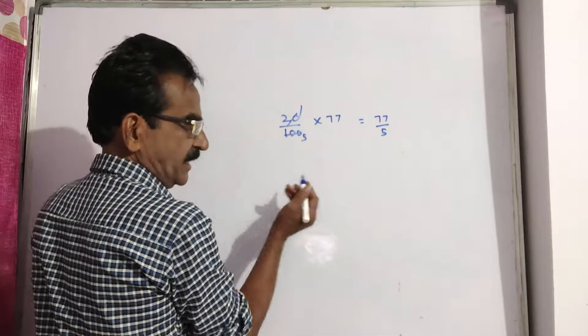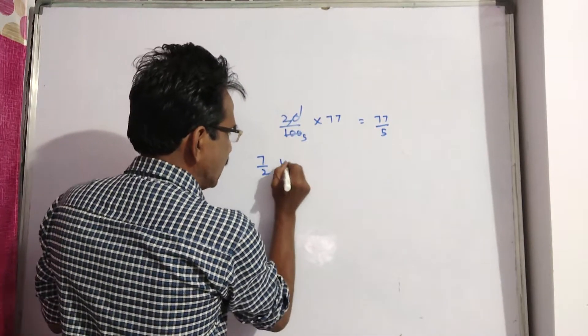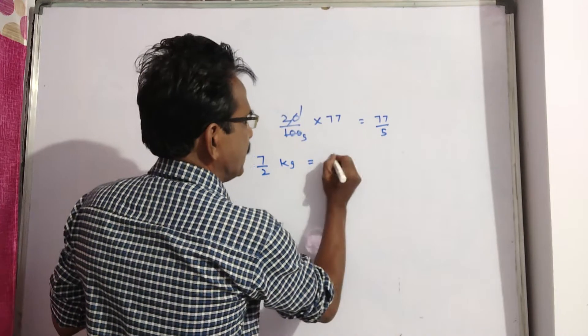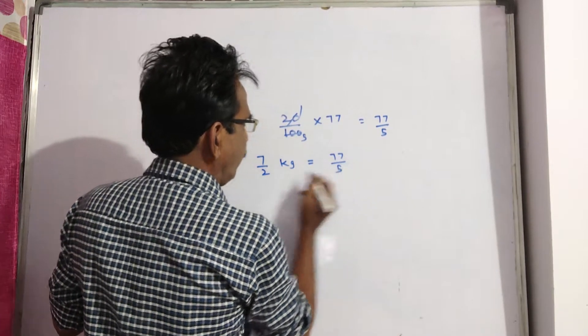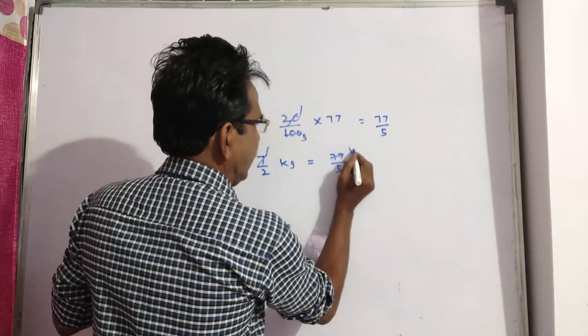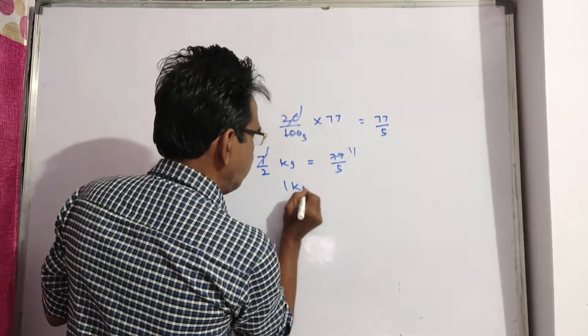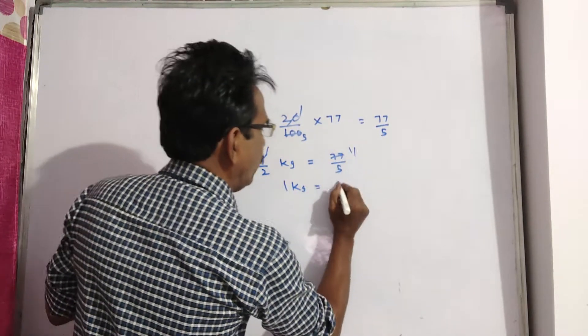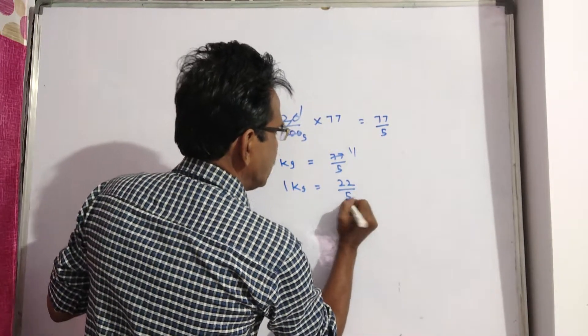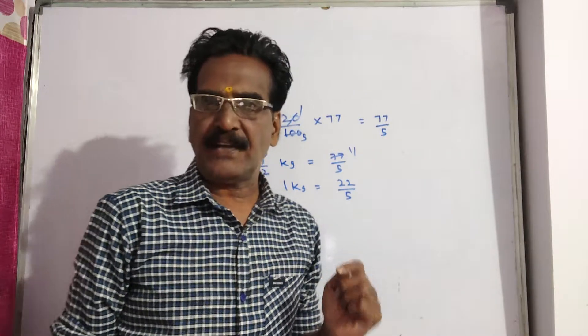3.5 means 7 by 2 kg. 7 by 2 kg rice price is equal to 77 by 5. So, 1 kg price is equal to 22 by 5. 1 kg rice is equal to 22 by 5.